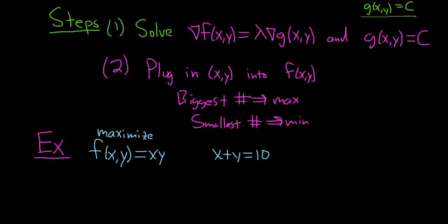First thing we have to do is compute the gradients. The partial derivative of f with respect to x: well, y is a constant, so the derivative of x is 1, so we just get y. And the partial derivative of f with respect to y: the x is a constant, so the derivative of y is 1, so we simply get x.